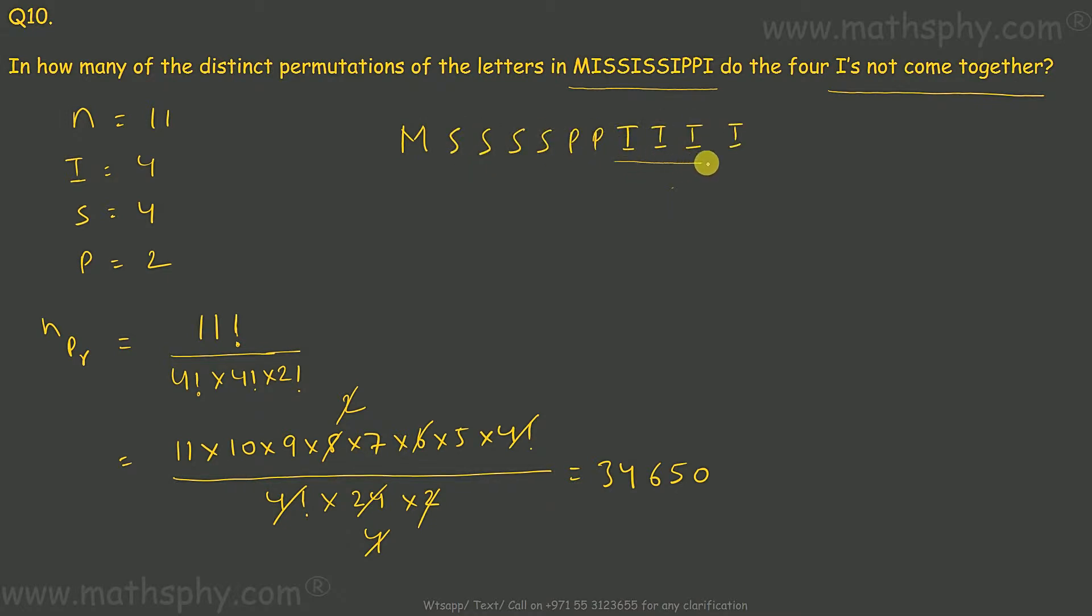Okay, let's consider these four I's as one bunch. In that case I have 1, 2, 3, 4, 5, 6, 7, and this is the 8th letter, where I have all the I's together.